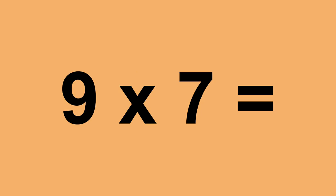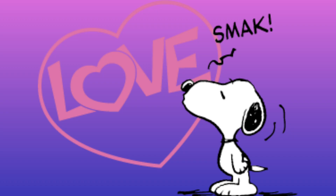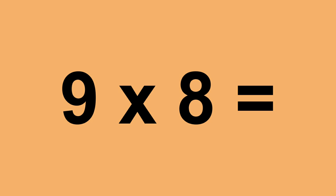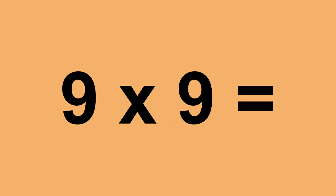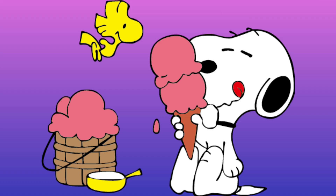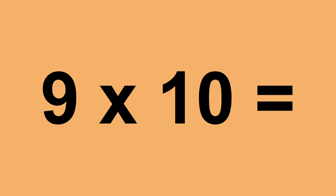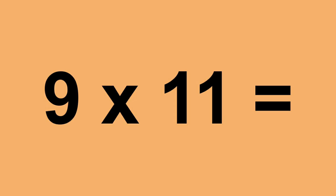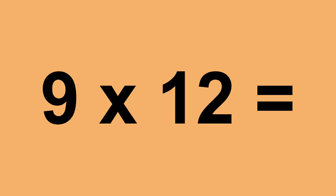9 times 7 equals 63. 9 times 8 equals 72. 9 times 9 equals 81. 9 times 10 equals 90. 9 times 11 equals 99. 9 times 12 equals 108.